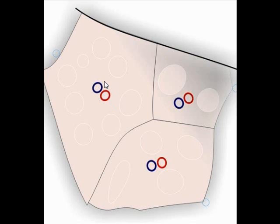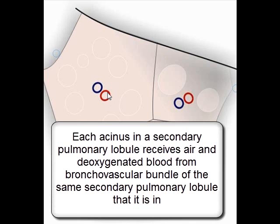The bronchovascular bundle also has connective tissue around itself. The lobular artery gives off several branches tiny enough to be called arterioles, which run alongside the respiratory bronchioles. These arterioles eventually end up in a network of capillaries that surround the alveoli of that primary lobule.